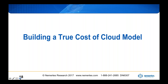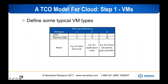The first step is to define typical virtual machine types. We've creatively named them Type 1, 2, and 3. Type 1 would have one virtual CPU and 2 gigabytes of memory — for something simple like a web front-end. Type 2 would have twice the processing capability and twice the memory — applicable for application code. Type 3 might have twice the processing and four times the memory for heavy calculations, grid computing, or back-end database. Now you have three VM types to build your workloads from.